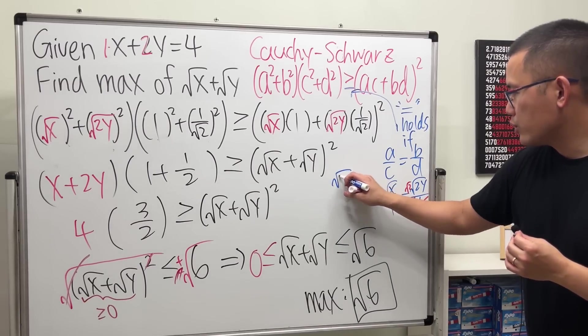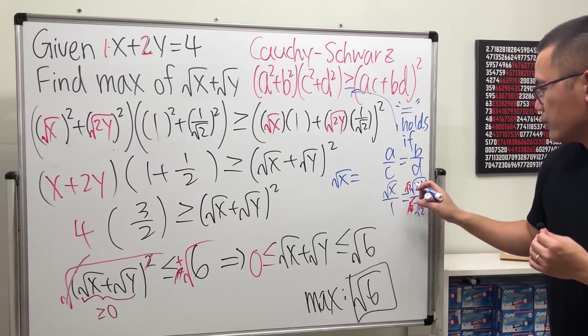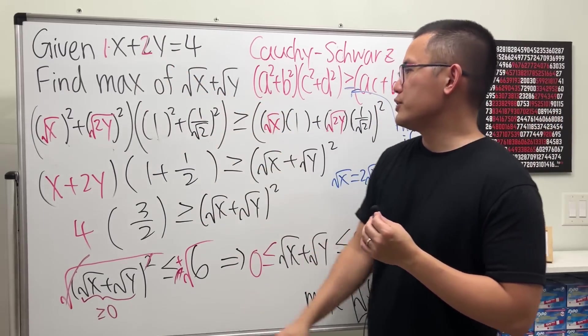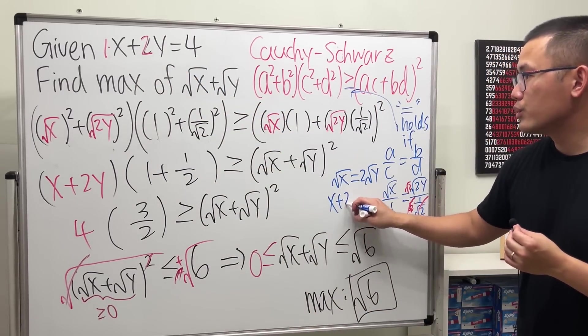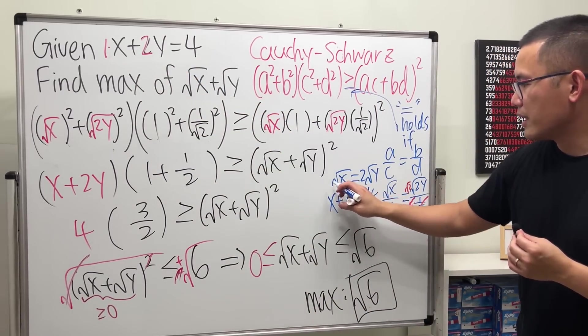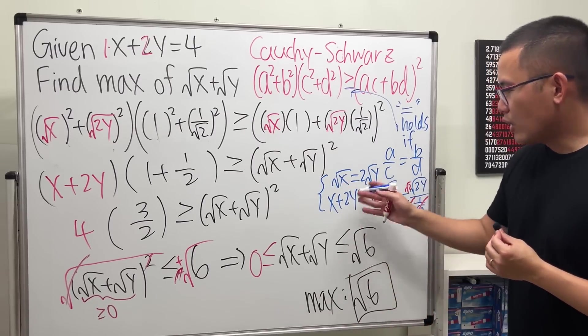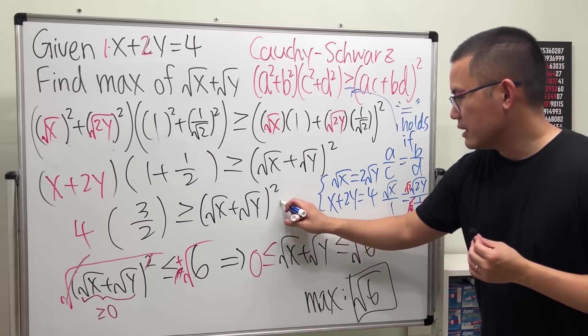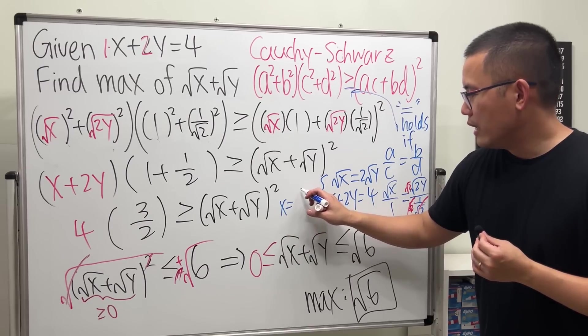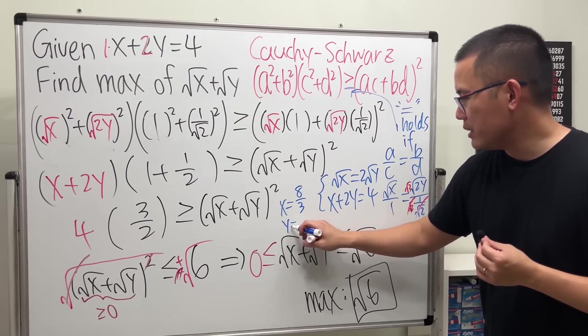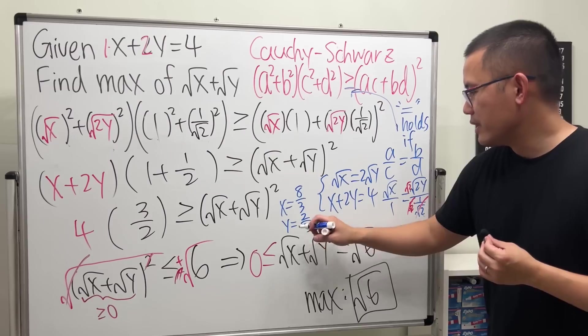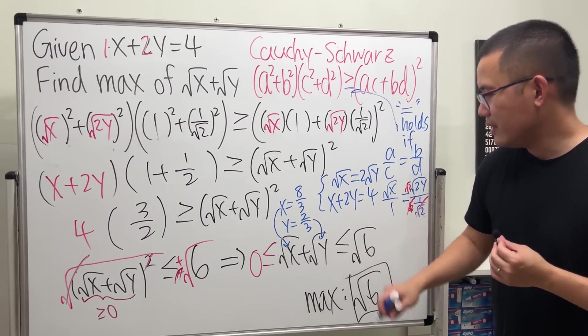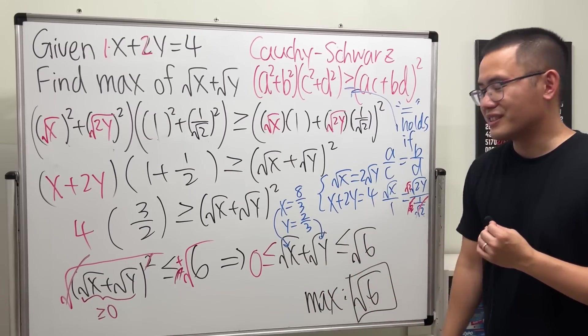Condition 2, the given information, x plus 2y is equal to 4. Here, we have a system of equations. Solve it. I will leave that to you on your own. You will see that x is equal to 8 over 3, and y should be 2 over 3. So, x goes here, y goes here, and that's how we can get square root of 6.